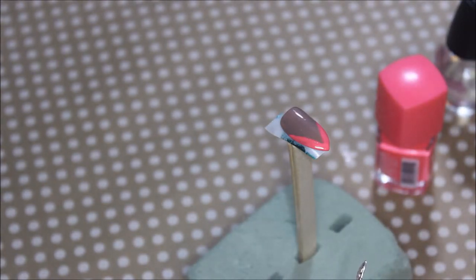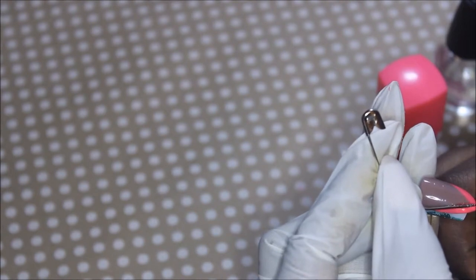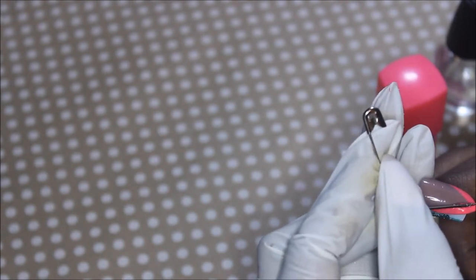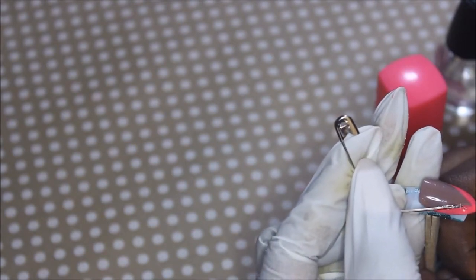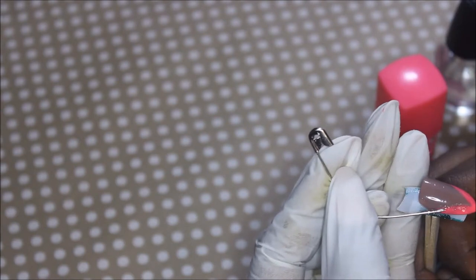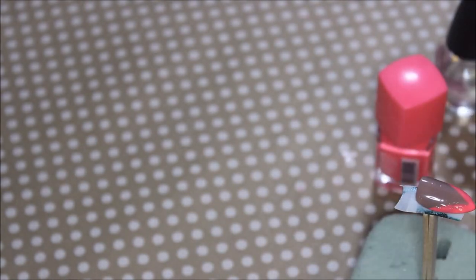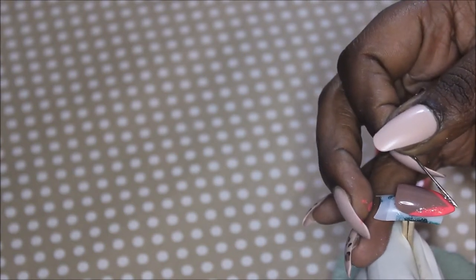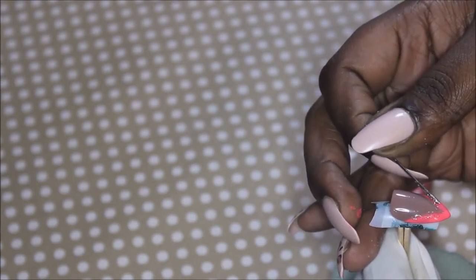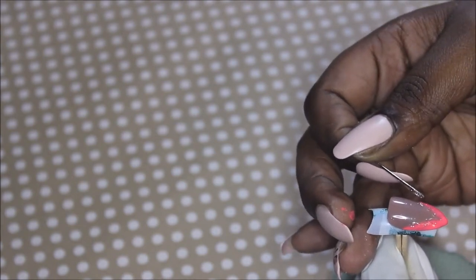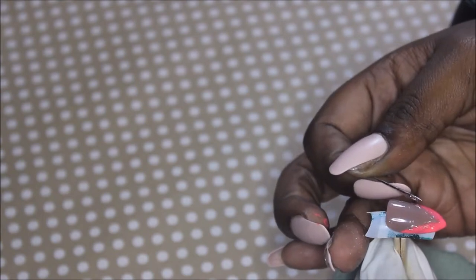I did two coats, and now I'm going in with glitter to soften the interior of the line. I'm using a safety pin again, but if you have a nail art brush or something better, use that. I think you could use a toothpick. I'm kind of dotting it and dragging it just to get it as precise as possible.